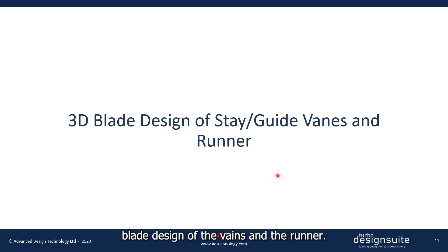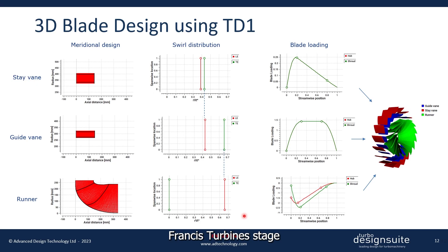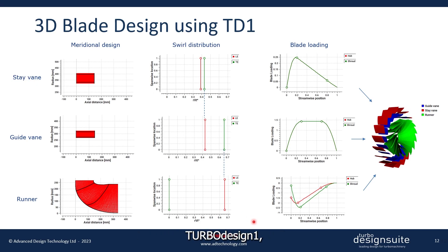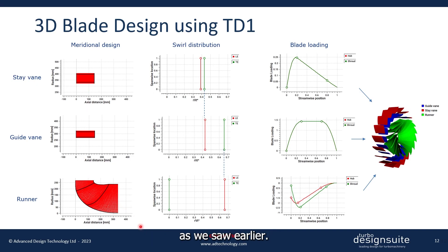Let's now move to the 3D blade design of the vanes in the runner. This is the setup for the baseline Francis turbine stage in our 3D inverse design software, TurboDesign One. These axial core distributions for the stay vane, guide vane, and the runner all come from the mainline code, as we saw earlier.